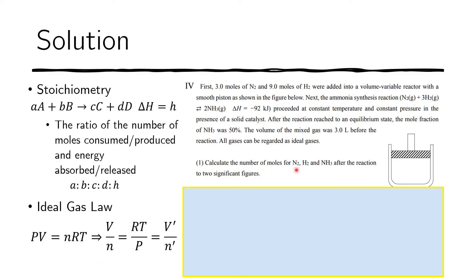Now we need to compute the number of moles of nitrogen, hydrogen, and ammonia after the reaction. So before the reaction, we know the number of moles of nitrogen and hydrogen, and of course we do not have any ammonia at first. The total number of moles of ideal gas before the reaction is 12.0, so 3 plus 9 plus 0 is 12 moles in total.